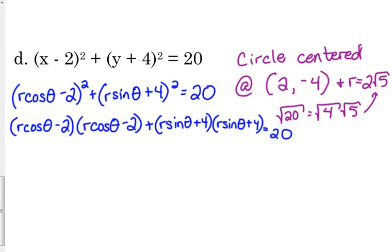So, when we foil this, when we multiply the first terms, r cosine of theta times r cosine of theta, r times r is r squared. Cosine times cosine is cosine squared. When we multiply the outside terms, r cosine of theta times negative 2. And when we multiply the inside terms, we get the same thing. So we have minus 2 r cosine theta minus 2 r cosine theta. So that's minus 4 r cosine theta. And then when we multiply the last terms, negative 2 times negative 2 is positive 4.